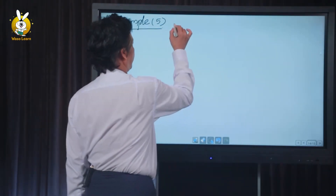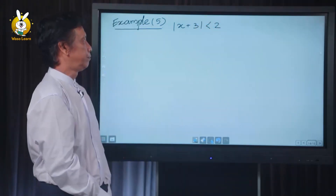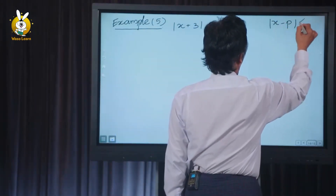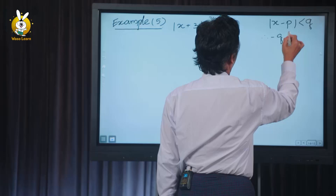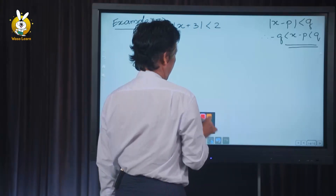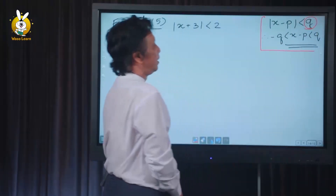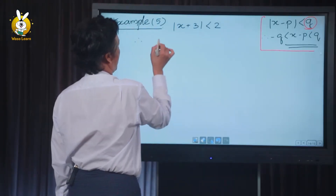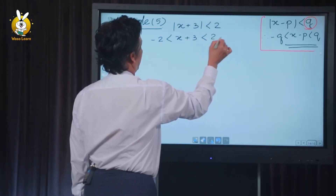For modulus of a plus 3 less than or equal to 2, we apply the formula: modulus of a minus b less than or equal to 2, which gives us modulus of a plus 3 less than or equal to 2 and modulus of a minus 2 less than or equal to 2.